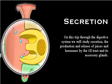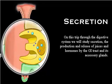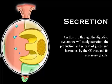On this trip through the digestive system, we will study secretion — the production and release of juices and hormones by the GI tract and its accessory glands.